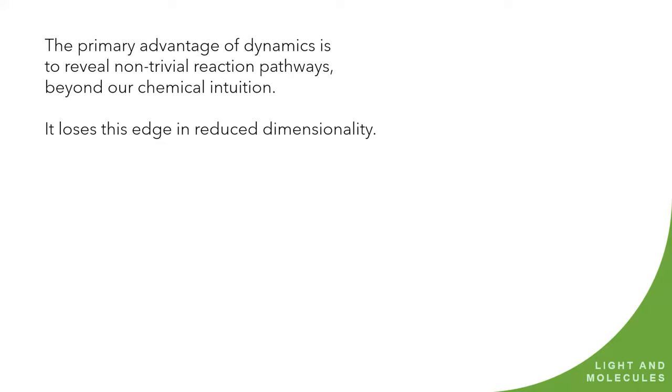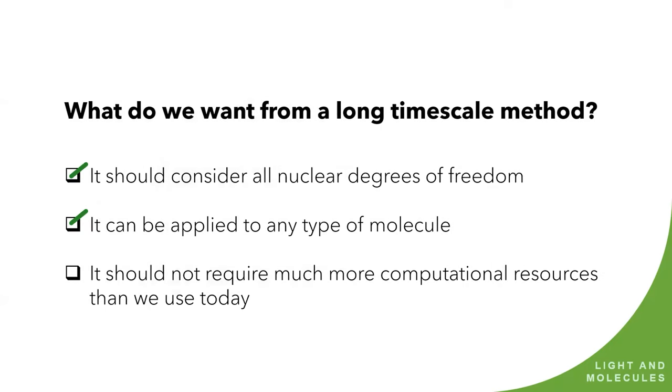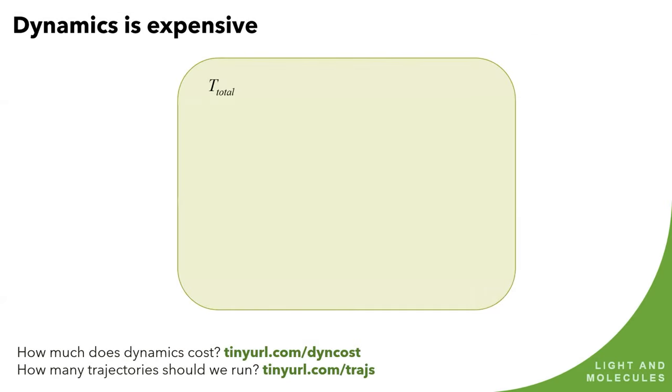So what do you want for a long time scale method? You should consider three things. First, the method should consider all nuclear degrees of freedom. Then you want a method that can be applied to any type of molecule. That's obvious because the primary advantage of using dynamics is that the dynamics shows non-trivial pathways, much beyond our chemical intuition. If you use dynamics and reduce the dimensionality, it loses that advantage. That's exactly what you don't want to do. And the best way of doing dynamics in full dimensionality is using mixed quantum classical methods, because it's increasingly in code there.